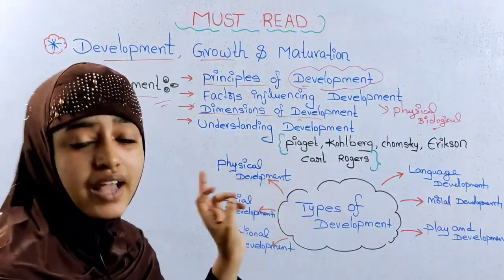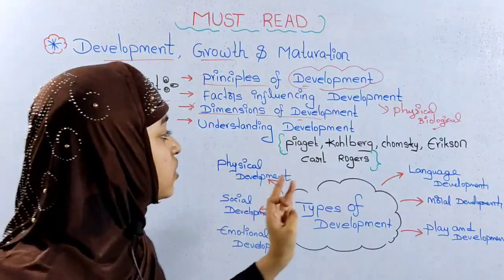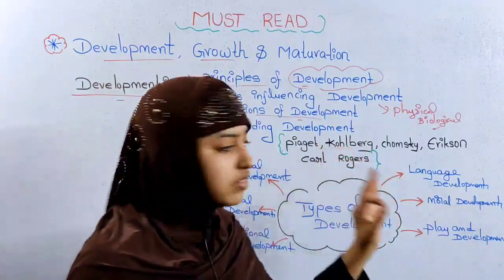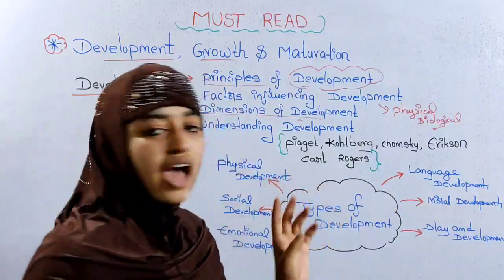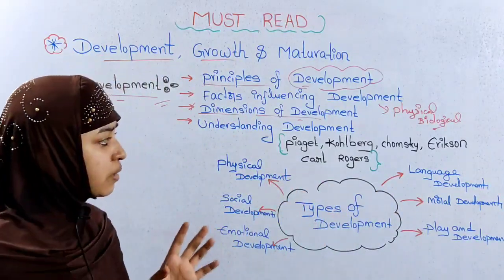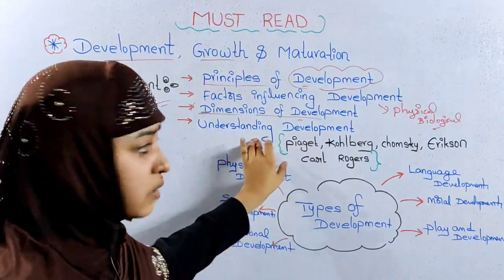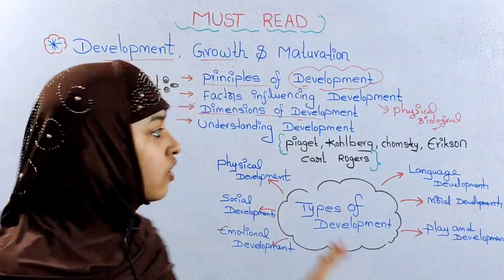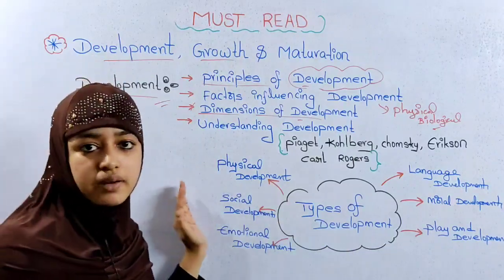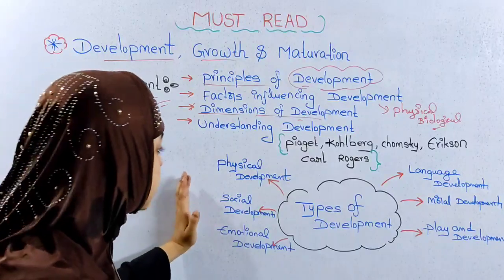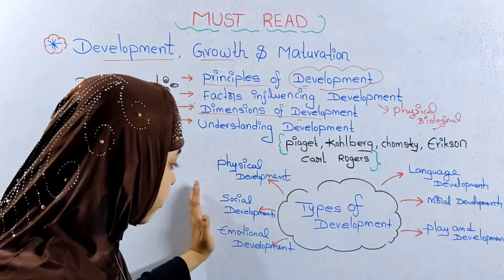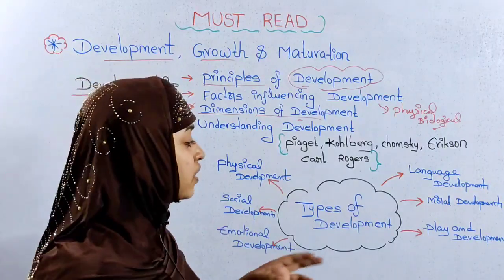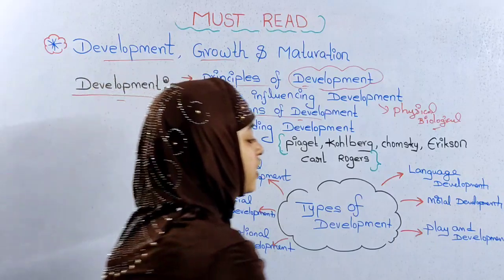It is called cognitive development — knowledge development. The concept of development is very important. Types of development include: physical development, social development, emotional development, language development, moral development, and play and development.